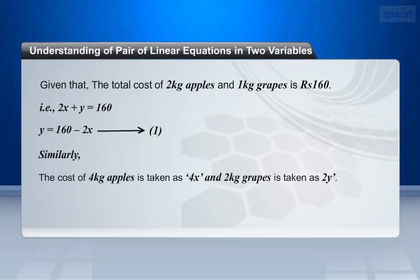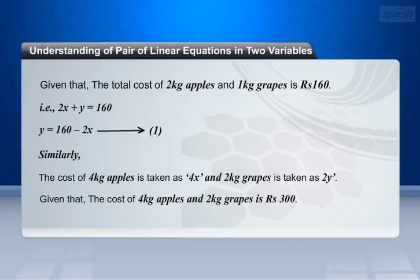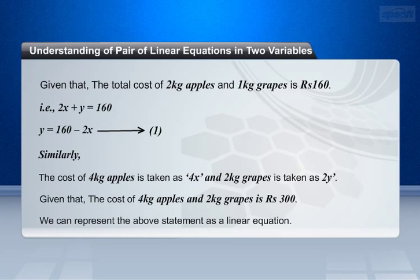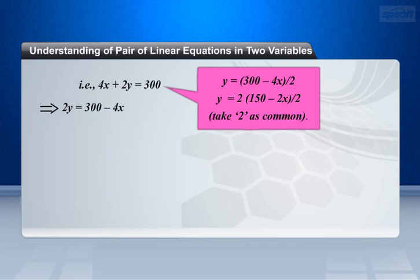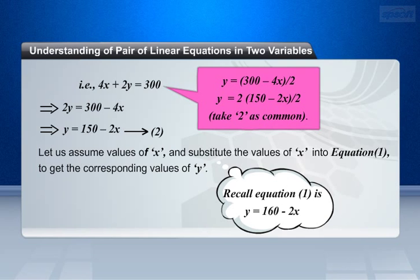Similarly, the cost of 4 kg apples is taken as 4x and the cost of 2 kg grapes is taken as 2y. Given that the cost of 4 kg apples and 2 kg grapes is 300 rupees, we can represent the above statement as a linear equation: 4x + 2y = 300. This implies that 2y = 300 - 4x. Taking 2 as common, y = 150 - 2x. Make it as equation 2.